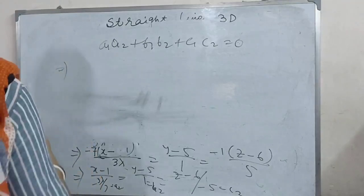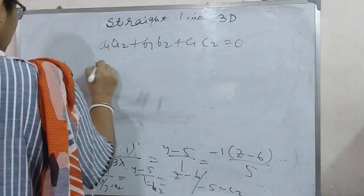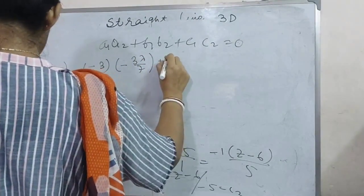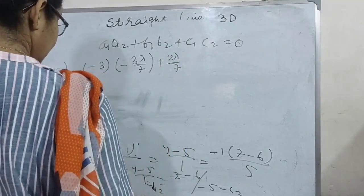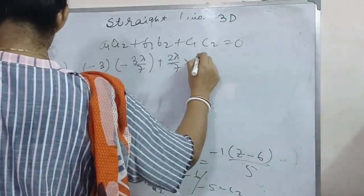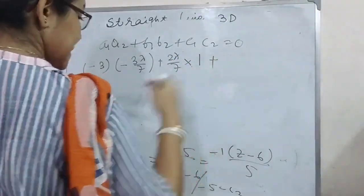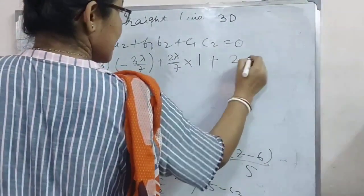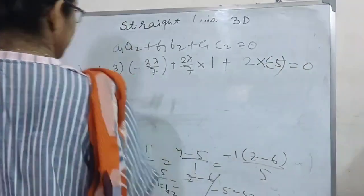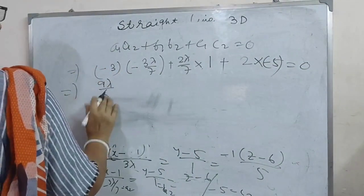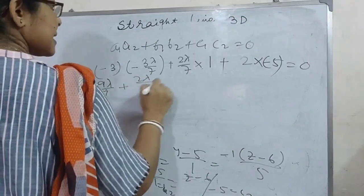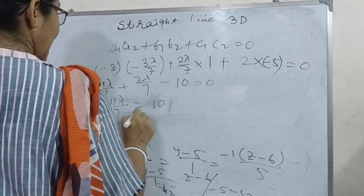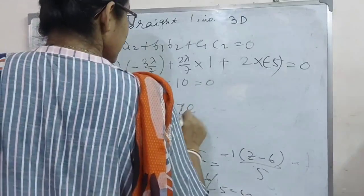From the orthogonality condition: (minus 3) × (minus 3 lambda/7) + (2 lambda/7) × 1 + 2 × (minus 5) = 0. This gives 9 lambda/7 + 2 lambda/7 minus 10 = 0. Solving, we get 11 lambda/7 = 10, so lambda = 70/11.